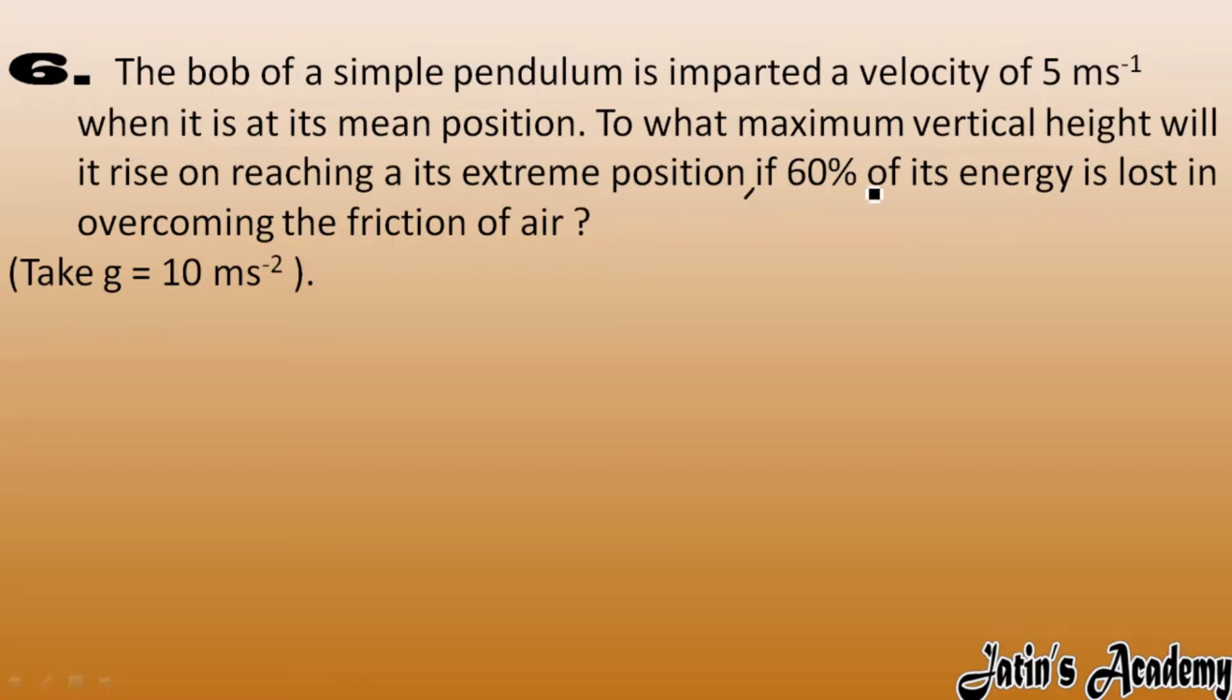Now carefully see, a bob of simple pendulum here it is having mass m. So initially this bob is at mean position, we have given velocity to this bob which is 5 meter per second, and after losing the 60% energy the bob gets some height. We have to calculate the value of this height.